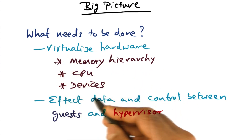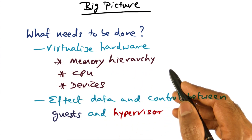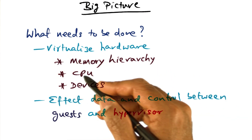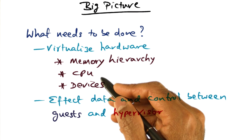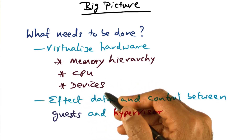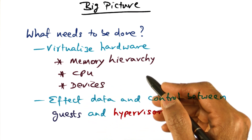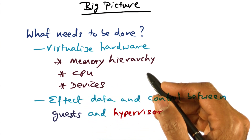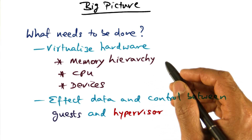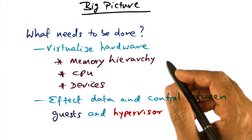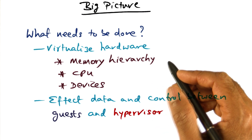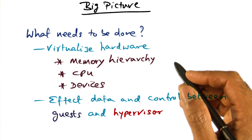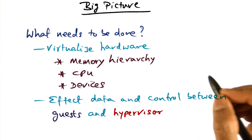And when we talk about hardware resources, we're talking about the memory hierarchy, the CPU, and the devices that are there in the hardware platform — how to virtualize them and make them available in a transparent manner for use by the operating systems that live above the hypervisor.